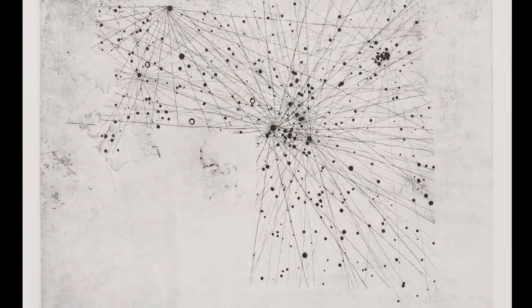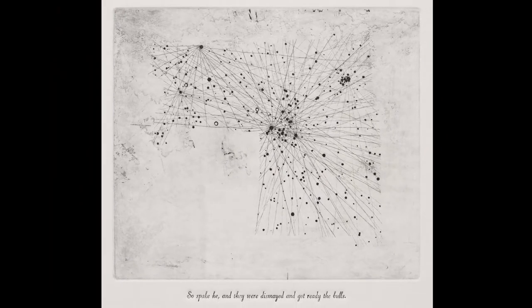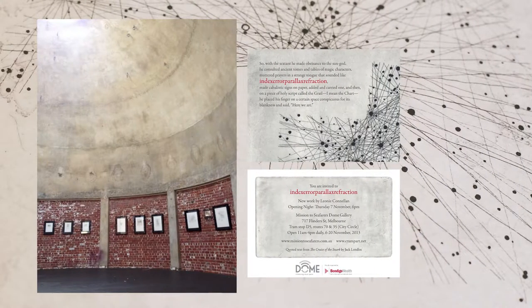This is Taurus, an etching and letterpress print that I made back in 2013. This artwork was made for a solo exhibition that I had in Melbourne, Australia at the Mission to Seafarers Norladome Gallery.